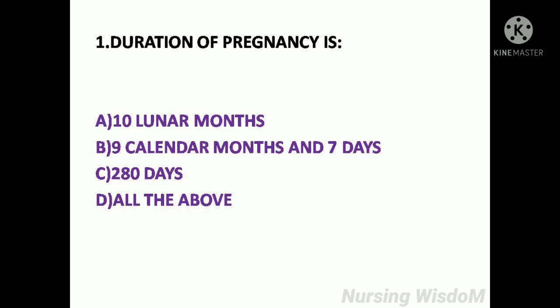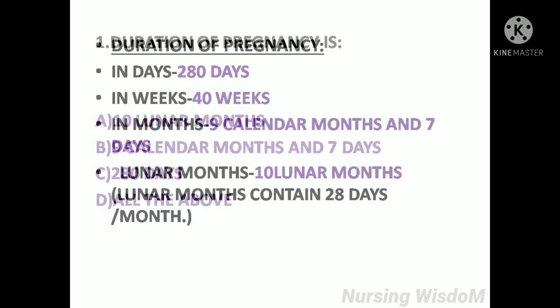First question: Duration of pregnancy is — Option A: 10 Lunar Months. Option B: 9 Calendar Months and 7 Days. Option C: 280 Days. Option D: All of the above.